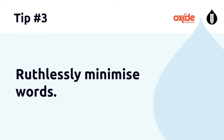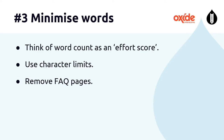So what can you do when there's no pattern? Ruthlessly minimize words. For every additional word you include on a website, you're increasing the effort you're asking the user to put in to consume that content, and with every extra word you're increasing the chances they will disengage. Some simple strategies: think of word count as an effort score to keep you mindful about how many words you're using. Use character limits, especially in summary text and cards on landing pages. And remove FAQ pages — they are generally duplicating content that is elsewhere on the site.